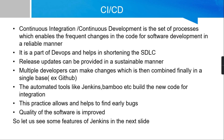Before moving on to what is Jenkins, let us first understand the concept of CI/CD. CI/CD stands for Continuous Integration and Continuous Delivery, and it is the set of processes which enables frequent changes in the code for software development in a reliable manner. Continuous Integration is a development practice where developers commit changes to the source code at regular intervals in a shared repository.